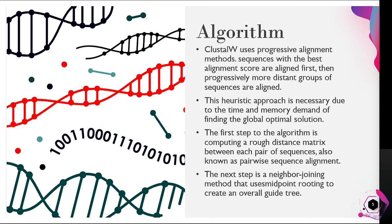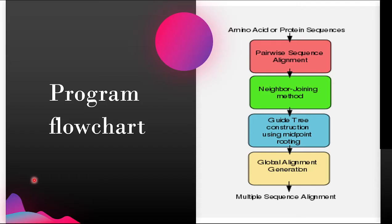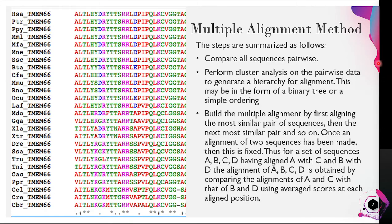The next step is the neighbor joining method, which uses midpoint rooting to create an overall guide tree. The program flow of ClustalW is: the amino acid or protein sequence is pairwise sequenced and aligned, then the neighbor joining method is applied, followed by guide tree construction using midpoint rooting, then a global alignment is generated and a multiple sequence alignment is made.